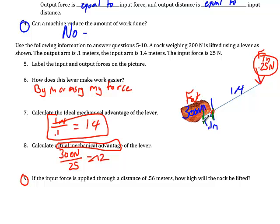From the fulcrum to where the force is applied is 0.1 meters. The input arm is 0.14, so I labeled that. Where the input force is applied to the fulcrum is 1.4 meters. And then it says the input force is 25 newtons. Put that on the end of the lever. So 25 newtons in gets me 300 newtons out.